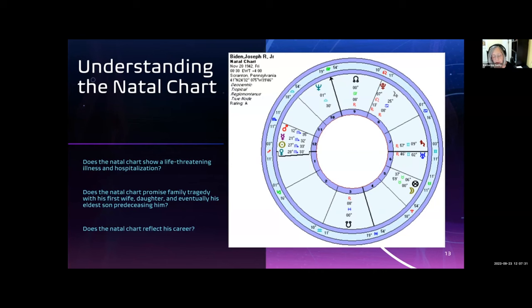Analyzing the natal chart before diving into the primary direction serves two purposes. One is to verify that the ascendant seems right. And the second is to get an idea of which planets are most influential. Those planets are likely to be involved in the primary directions. And we said that the primary directions have to reflect the natal chart.